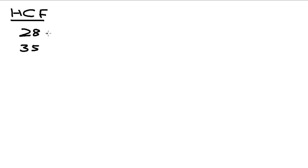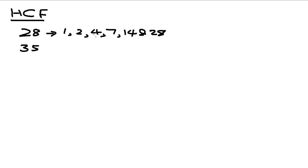let's look at 28 and 35. So 28 will have the factors 1, 2, 4, 7, 14, and 28. Whereas 35 will have the factors 1, 5, 7, and 35.